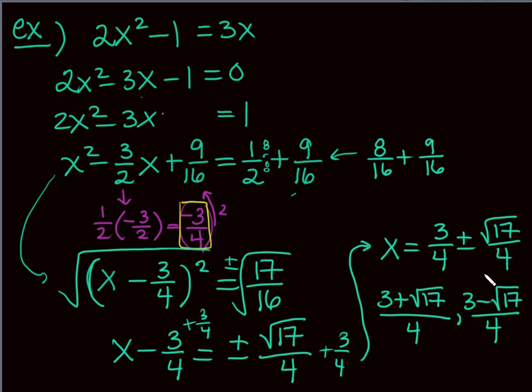To summarize completing the square: you must have a 1 in front of x². Take half the middle coefficient, square it, and add to both sides. Rewrite the left side as (x ± something)². Don't just memorize 'add b²/4' — go through the steps so you understand why. Understanding the process makes it easier to remember.